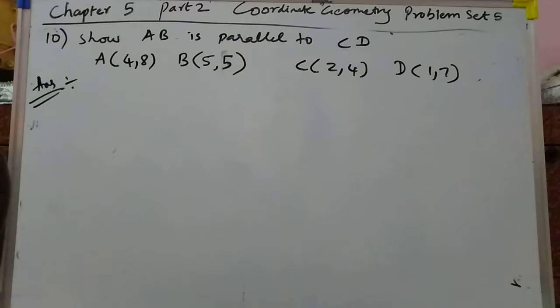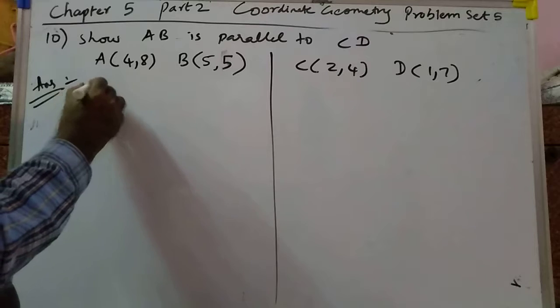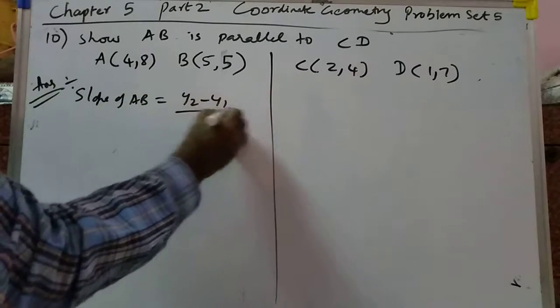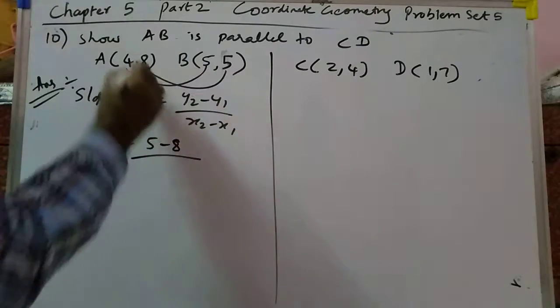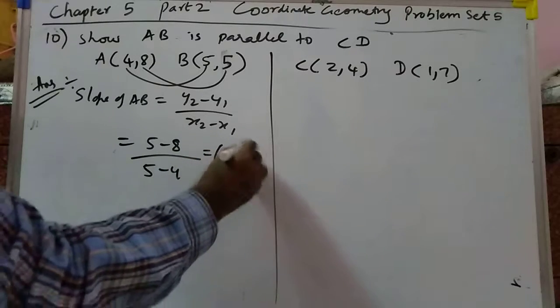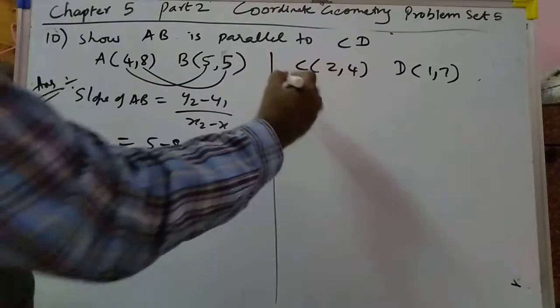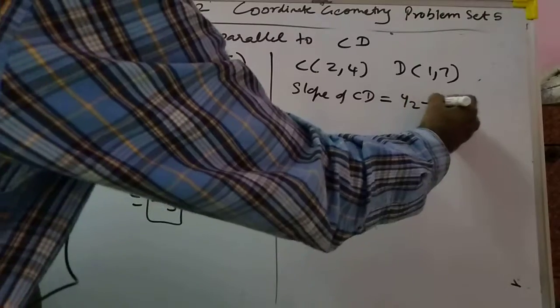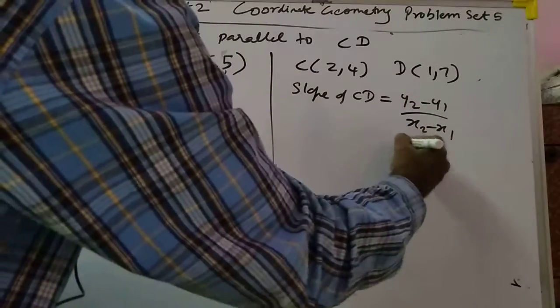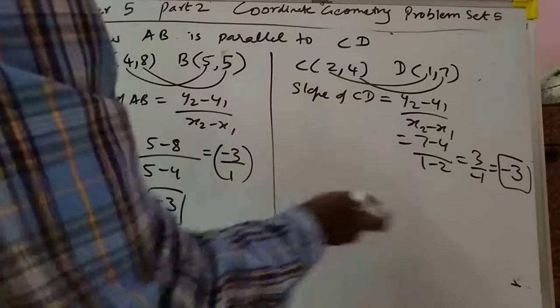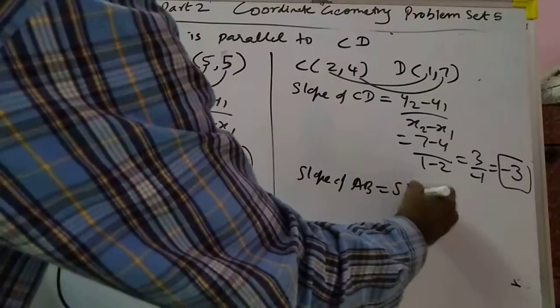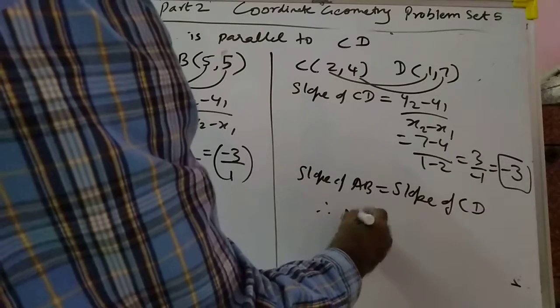Problem 10: we have to show that the line joining the points is parallel. Take slope of AB — that is (5 minus 8) over (5 minus 4), which is minus 3 over 1, equal to minus 3. Slope of CD is (7 minus 4) over (1 minus 2), which is 3 over minus 1, equal to minus 3. Both slopes are equal, so slope of AB equals slope of CD, therefore AB is parallel to CD.